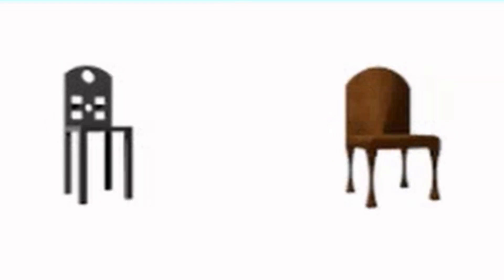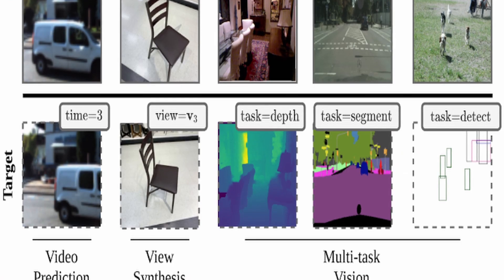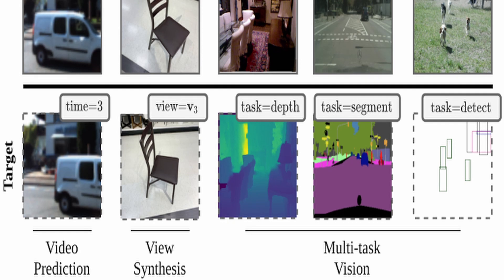A single model was also trained by the team on eight different tasks using both image and video. These included depth estimation and instance segmentation, optical flow, and object detection.